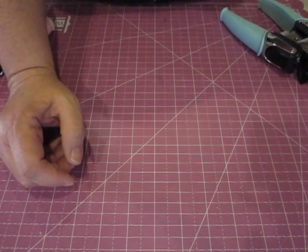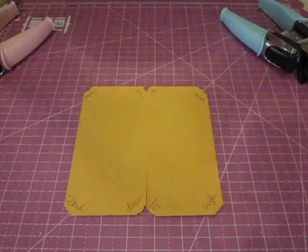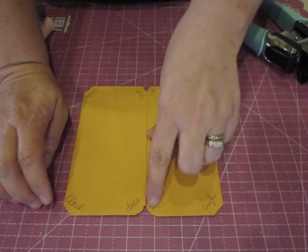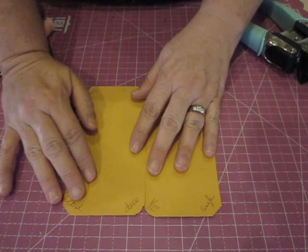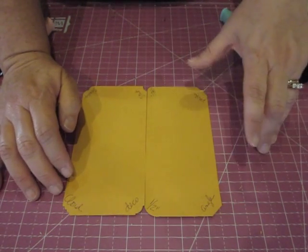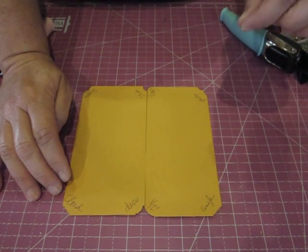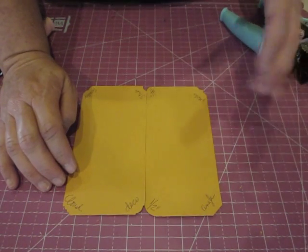A cool thing that I did when I first got my Corner Chompers was I made this visual aid for myself. I punched each cut and then labeled it, so I just hang it on my bulletin board. I have this visual reminder of what each punch does and what that cut looks like, so I can match it up to whatever project I'm working on.